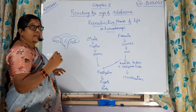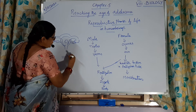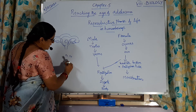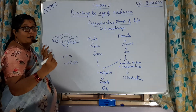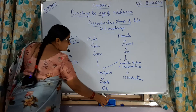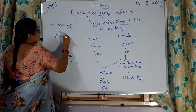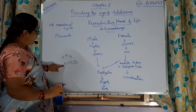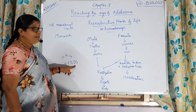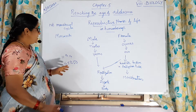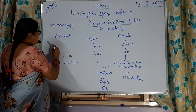The menstrual cycle first starts on the onset of puberty in girls, that is at 11 to 14 years, and it will continue up to the age of 45 to 50. The first menstrual cycle observed in girls is called menarche. It will be observed up to the age of 45 to 50 years, after which the ovaries will not produce the ovum. Then the menstrual cycle will stop, and the last menstrual cycle is called menopause.